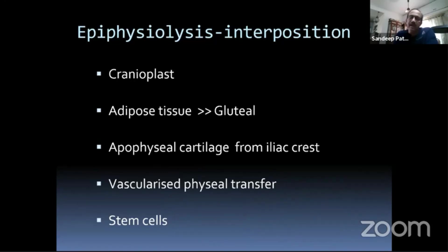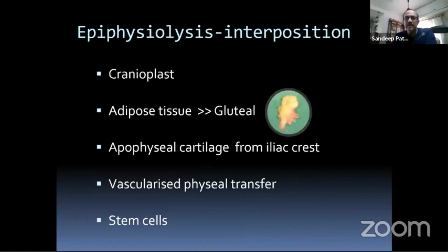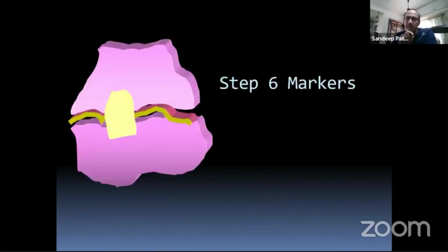What do you interpose after bar excision? Options described include cranioplast, adipose tissue from the buttock region, apophyseal cartilage from iliac crest, and stem cells or vascular special transfers. In the average situation, fat is good enough. Use a Vicryl stitch to anchor it in bone so it doesn't wash off when the tourniquet is released. Finally, put in a small steel wire marker up and down — a metallic Harris line — so you can monitor whether growth resumes after excision.